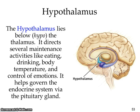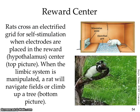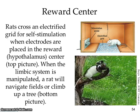The hypothalamus — 'hypo' means below, so it's below the thalamus. It directs maintenance functions: eating, drinking, body temperature, and controlling emotions. It's related to the pituitary gland. Research shows rats will cross an electrified grid for self-stimulation when electrodes are placed in the reward center of the hypothalamus — they'll navigate fields or climb trees just to get that reward signal, showing how the limbic system can be manipulated.